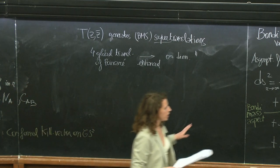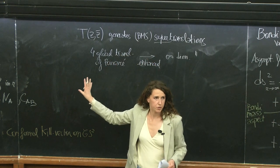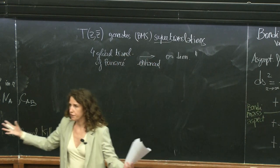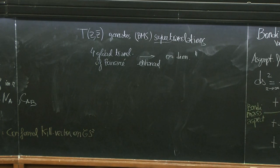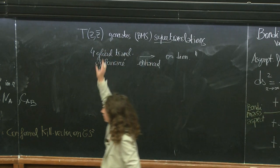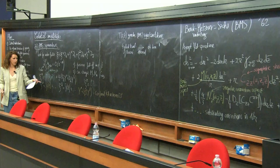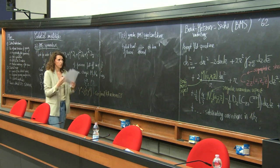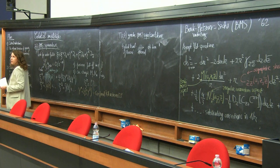This was very surprising for Bondi, Metzner, and van der Burg when they found this symmetry structure. They wanted to recover the Poincaré group — the isometry group of flat spacetime. Instead, they were stuck with the appearance of this arbitrary function T. They were really bothered. They said: what is this function? We don't want it. They really tried hard to kill it by imposing stronger boundary conditions.